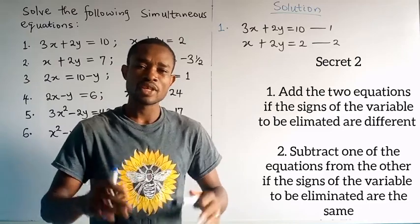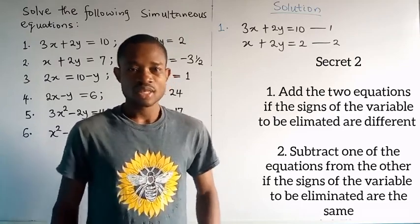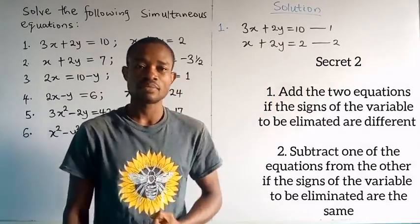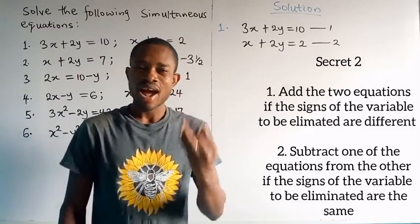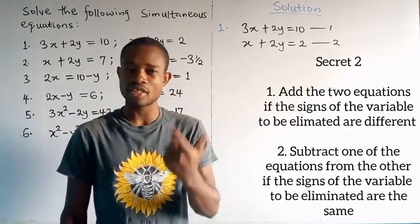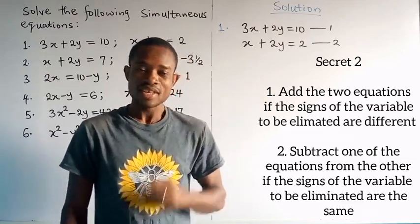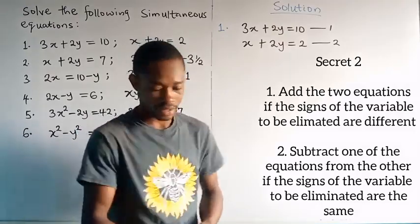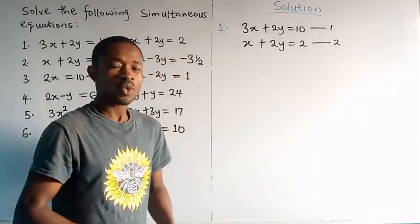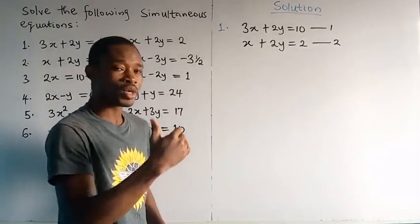As a quick summary of the secrets: you need knowledge of LCM; you need to know whether to use addition or subtraction to eliminate. If the signs of the variable you want to eliminate are different, use addition. If the signs are the same, use subtraction. Since y has the same coefficient in both equations of question one, I'll eliminate straight by doing equation 1 minus equation 2.